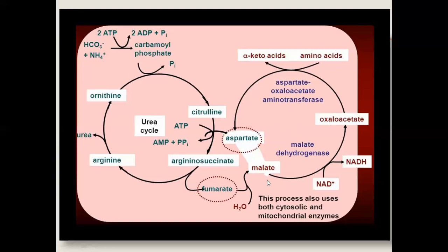The fumarate is converted into malate by the enzyme malate dehydrogenase. This malate then enters the Krebs cycle as one of its intermediate products, and malate is converted into oxaloacetate. During this conversion, malate dehydrogenase acts and there is production of NADH. Oxaloacetate is thus an intermediate product of the Krebs cycle.